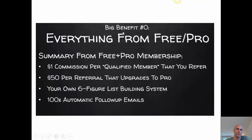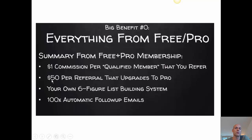So here's actually benefit zero, because zero means you get everything from free and pro. This is a short summary: once you have a qualified member, you will get $1 in commission per member that you refer. If one of your qualified members upgrades to a pro member, you will get $50 in commission for that upgrade. You will also get your six-figure list building system and the 100x automatic follow-up emails in your autoresponder.